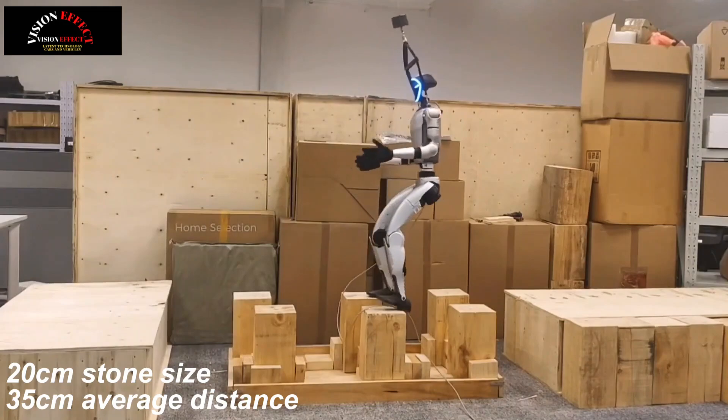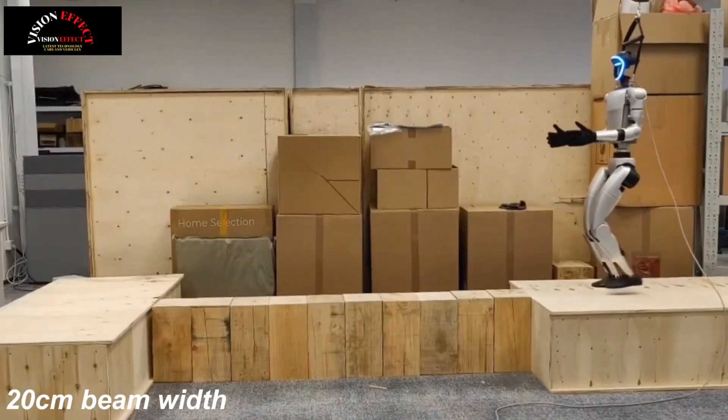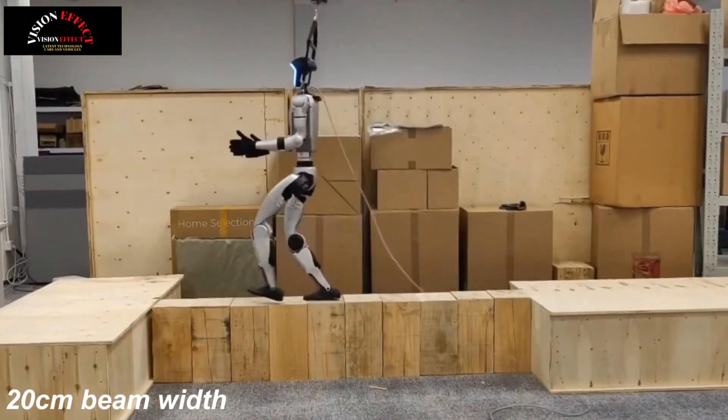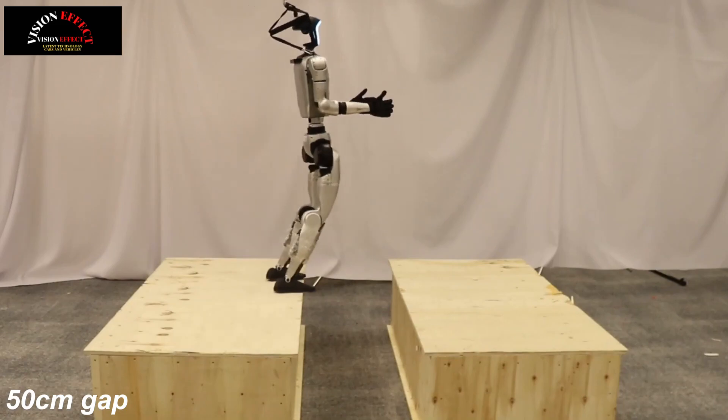To promote sufficient trial and error discovery, Beam Dojo incorporates a two-stage RL approach. The first stage relaxes the terrain dynamics by training the humanoid on a flat terrain and providing it with task terrain perceptual observations, and the second stage fine-tunes the policy on the real task terrain.